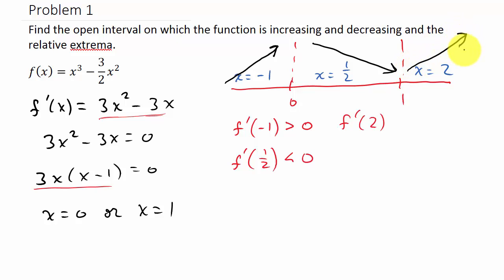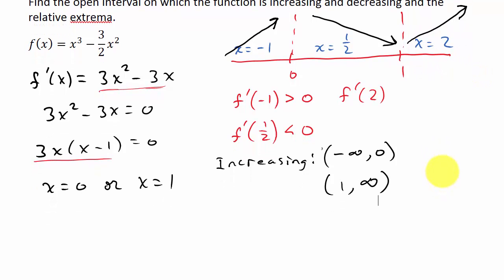So now we can say that it is increasing from negative infinity to zero and from one to infinity on this interval. And then it is decreasing from zero to one. Alright, so here's my answer for increasing and decreasing.